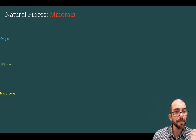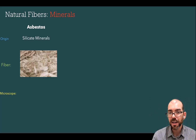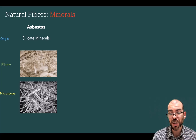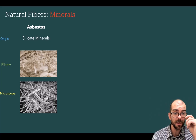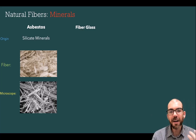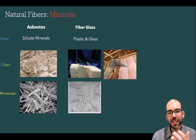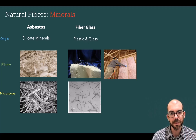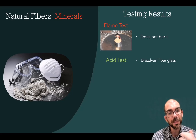Let's look at minerals. Not many fabrics are made out of minerals, but there are a couple. One is asbestos, made out of silicate minerals — under the microscope it's very jagged and brittle. Fortunately we've learned that asbestos is a carcinogen, so it's not something you'll see in modern investigations unless working with a really old facility. Fiberglass is currently used — made out of plastic and glass and commonly used to insulate homes. Under the microscope it's also jagged like asbestos but with very small, brittle fibers. A flame test does nothing to these minerals — they don't burn. An acid test will dissolve fiberglass but not asbestos.